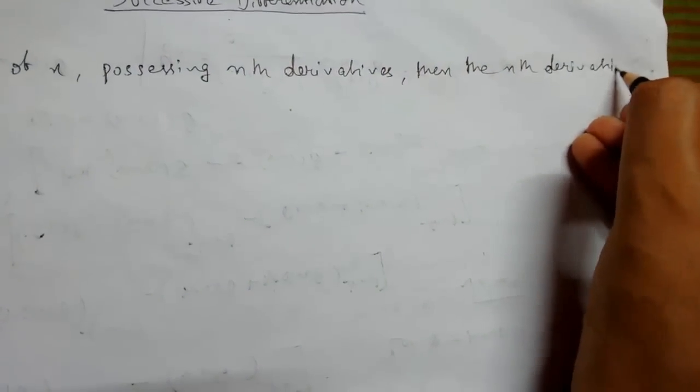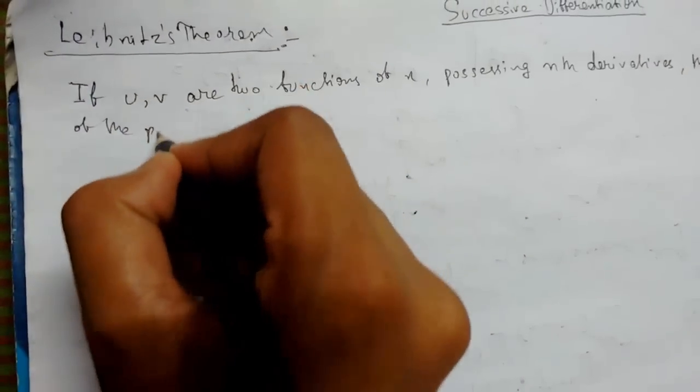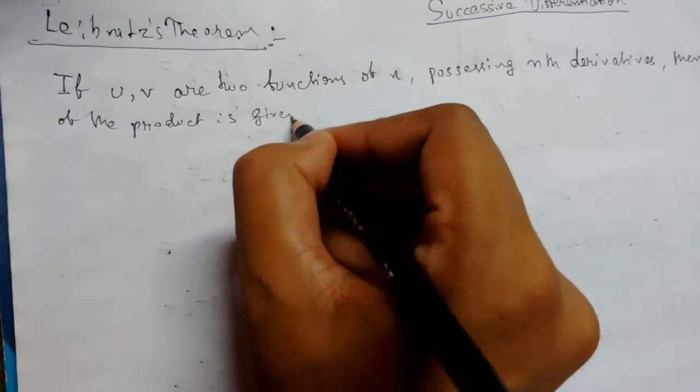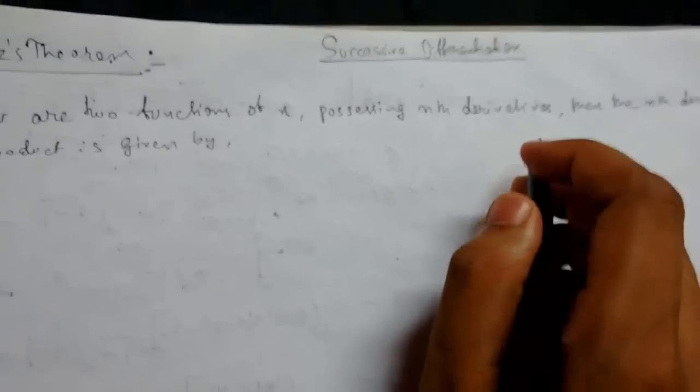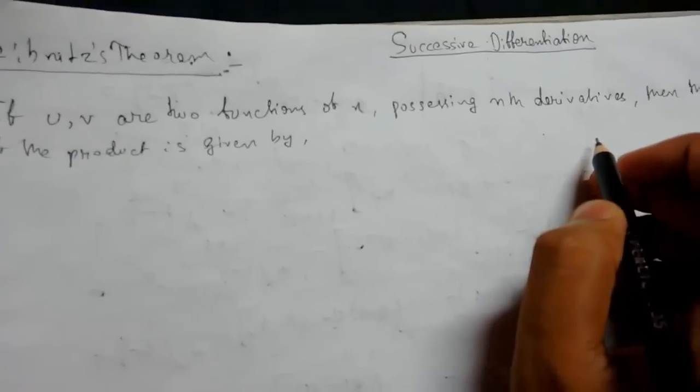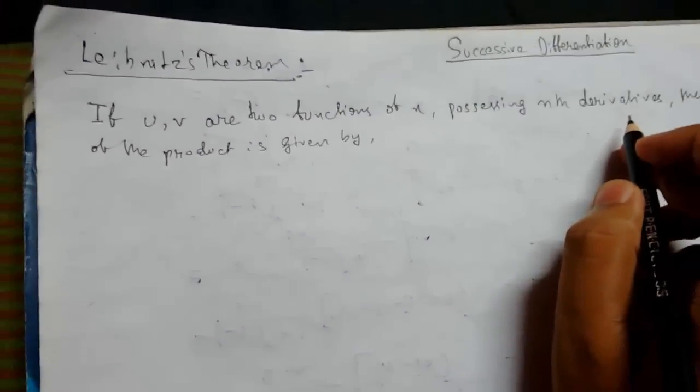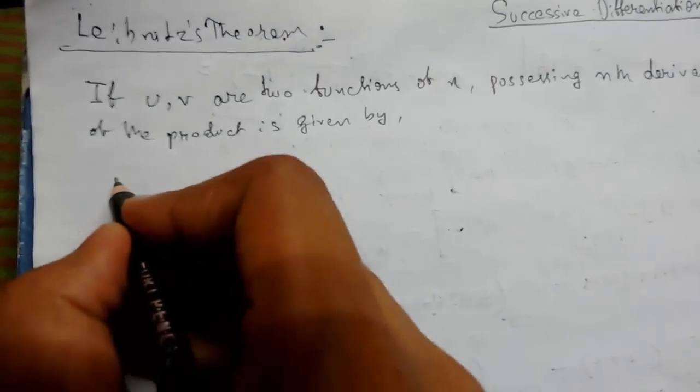is given by - so the two terms involving in Leibniz theorem, both individual terms should possess nth order derivative, then only the product is possible, otherwise it is not possible. So it will be given as this: